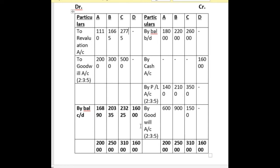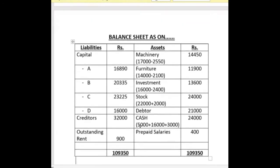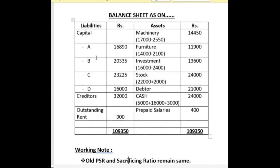Now we prepare the balance sheet. On the liability side, we simply transfer the capital balances from partner's capital account: A is 16,890, B is 20,335, C is 23,225 and D is 16,000. Creditors remain the same at 32,000 as there is no adjustment, and outstanding rent of Rs. 900 is also added. On the asset side, machinery value is decreased by 15%, so 17,000 minus 2,550 gives a final balance of 14,450. Similarly, furniture is 11,900 and investment is 13,600.